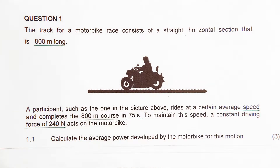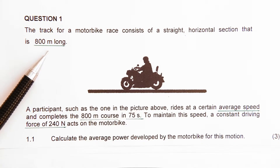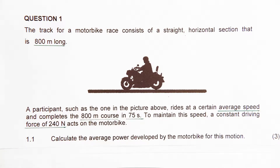Question 1 from the Work Energy and Power question book. If you don't have the book it doesn't matter, I will go through the question. The track for a motorbike race consists of a straight horizontal section that is 800 meters long. A participant rides at a certain average speed and completes the 800 meter course in 75 seconds. To maintain the speed, a constant driving force of 240 newtons acts on the motorbike — this is the force of the engine. I've underlined all the important points, which you should also do while reading a question. Then go back and read your question again to make sure you have marked all the important information.